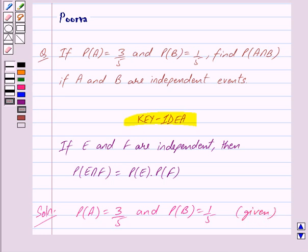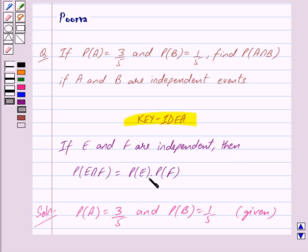We are also given that A and B are independent events, and we have to find probability of A intersection B. By the key idea, we know that if E and F are independent events, then probability of E intersection F is given by probability of E into probability of F.